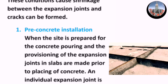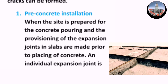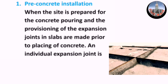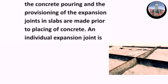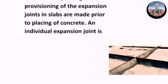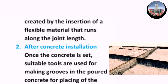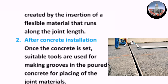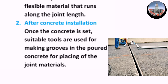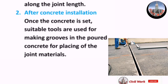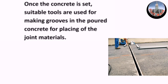One, pre-concrete installation — when the site is prepared for concrete pouring, the provisioning of the expansion joints in slabs is made prior to placing of concrete. An individual expansion joint is created by the insertion of a flexible material that runs along the joint length. Two, after concrete installation — once the concrete is set, suitable tools are used for making grooves in the poured concrete for placing of the joint materials.